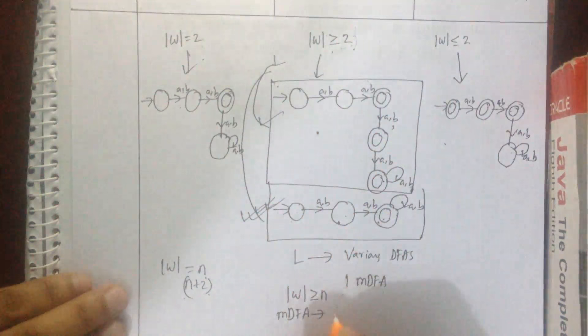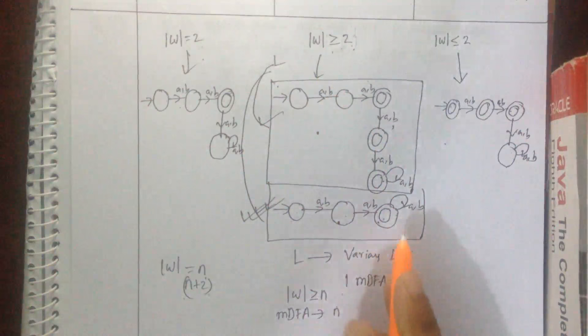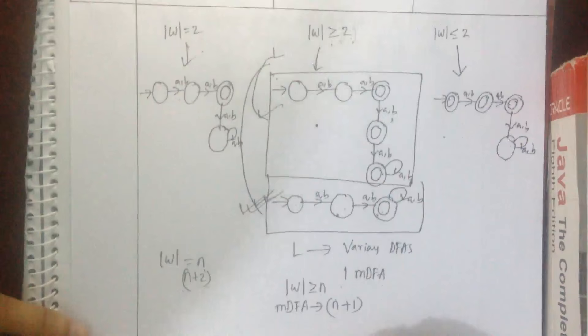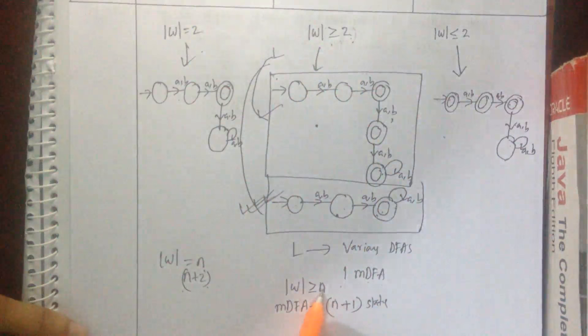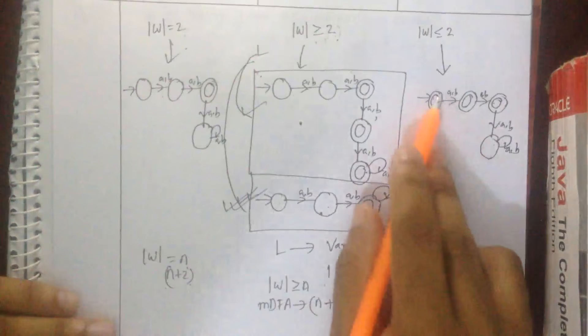1, 2 — এই যে 1, 2, 3 — তাহলে এখান থেকে 2 i tata length, 2 i tata length হলে যে state ছিল কত কলো — 3 tata। তাহলে n plus 1 — তাহলে minimum DFA-তে n plus 1 state হবে কত কলো state হবে minimum। আর যদি greater than 2 ছিল তাহলে n-এর জায়গায় আর জুড়ি 2 i বোসে — 2 i আরে খে 3 তাহলে এখান থেকে minimum step কত কলো 3।